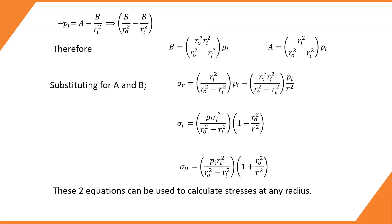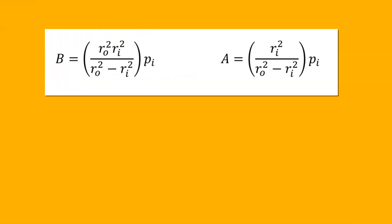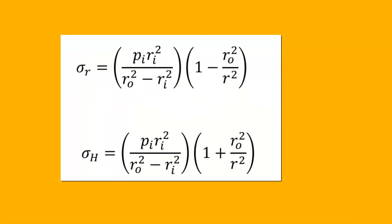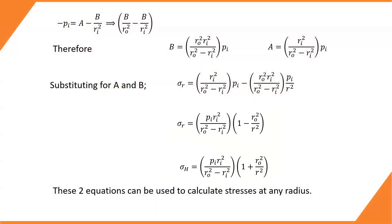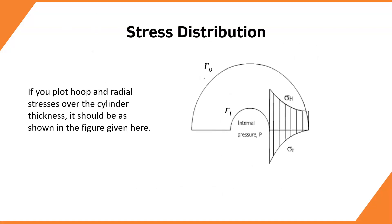By resolving equations 1 and 2, we have obtained values for A and B, and then equations for radial stress and hoop stress. These two equations can now be utilized to find the stresses at any point across the wall thickness.